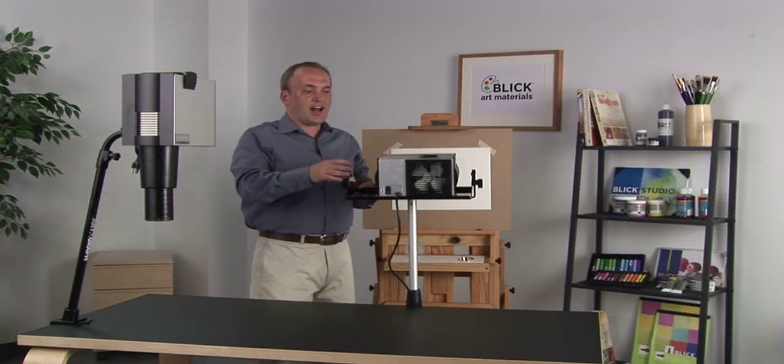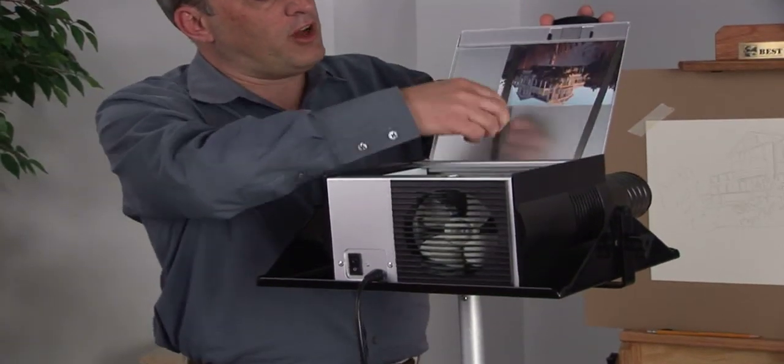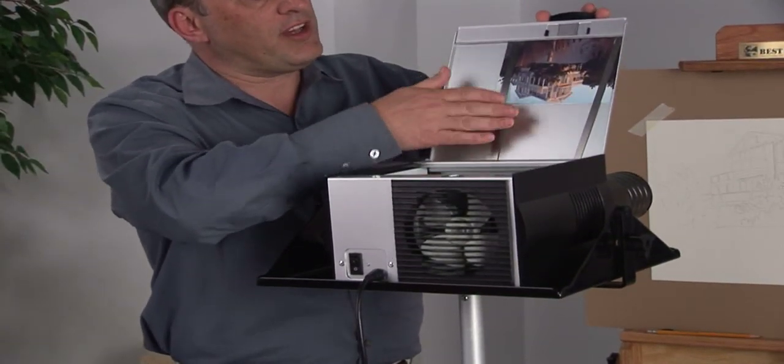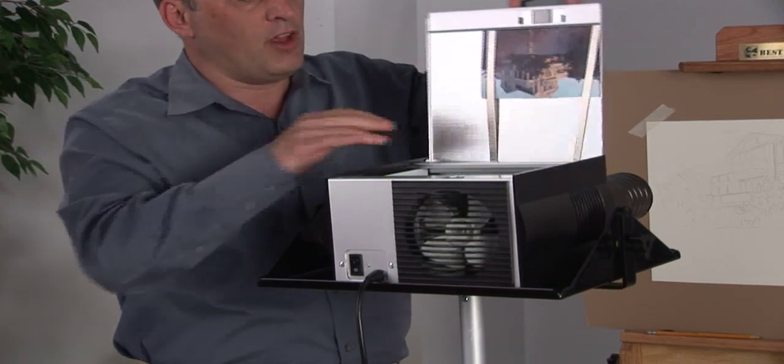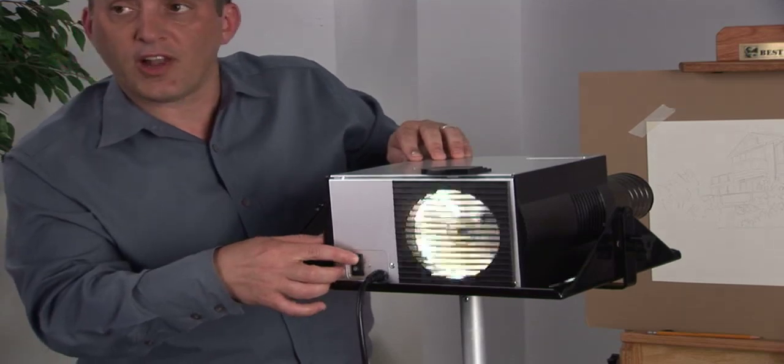What we're going to do today is simply show you how to use this projector. We start by loading the artwork inside of the hood underneath these clips. You orient the artwork upside down when you're looking at it this way. Once you've got the artwork loaded, you close the door and turn on the light switch.